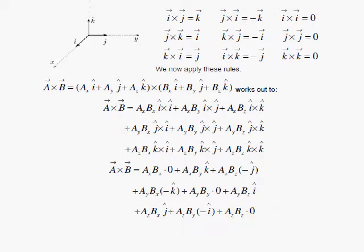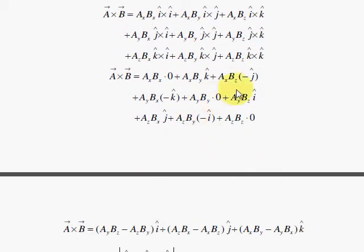So now I group these carefully. I find my i hat, and I see Ay Bz. And then there's a negative one here, Az By. And that's easy to remember because look, these flip. See Ay and then a Bz. And now I have Az and By.